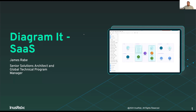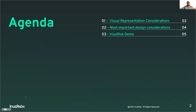Today we're going to talk through visual representation considerations — the same things we've hit every single month in this series. What are the most important things to consider in our diagram and why they're important? And then we're going to get through some design considerations for our SaaS application, and then jump straight into areas of risk.